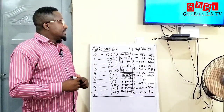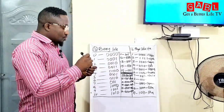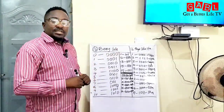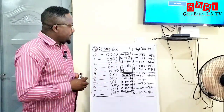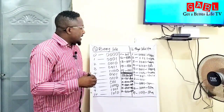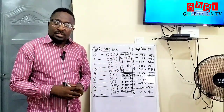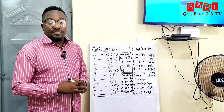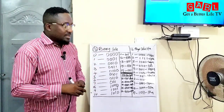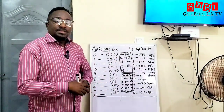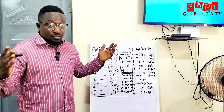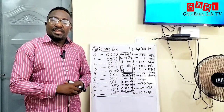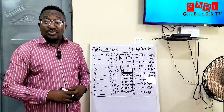Now in our Odu Ifa we have what is called the 16 major Odu Ifa — from Ogbe to Ofun. These are the 16 major Odu Ifa that we have. Our ancestors figured this out by themselves. Our ancestor Orunmila, who happens to be the Orisha of wisdom and knowledge, gave us this code even before the invasion of white supremacy and the slave masters into our land — thousands and thousands of years ago.